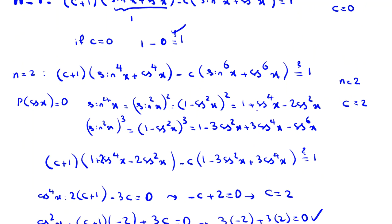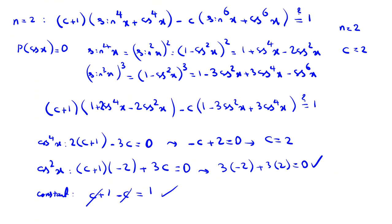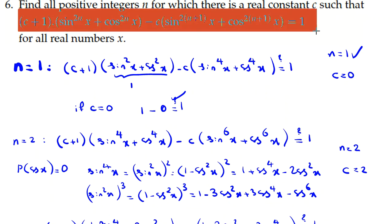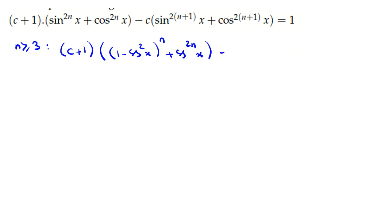For n=1 and n=2 we found the answer. Now the idea is clear: express as a polynomial in cos x and match coefficients, since it holds for all x. For n ≥ 3, let's consider: c+1 times (1 - cos²x)^(n+1) plus cos^(2n+1)x equals 1. This is a polynomial in cos x equal to 1 for infinitely many values of x.